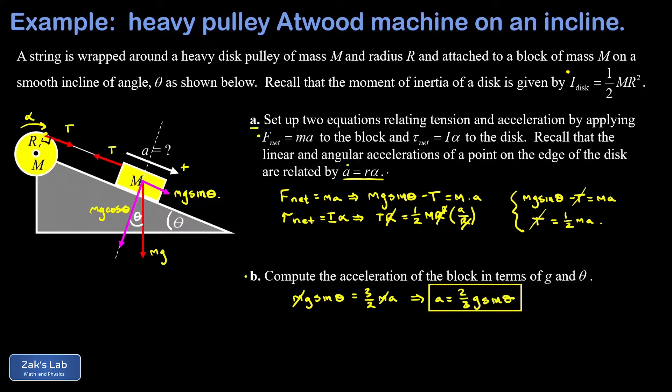When I gave this problem on an exam I needed a two-part question, so I didn't ask the obvious follow-up: what's the tension in the string? I want to show that real quick. All we have to do is plug in the a we just got into the second equation, and I get T equals one half ma. We've got the tension—T is one half ma, and I just figured out a is two-thirds g sine theta. The two's cancel, and I find a tension in the string of one-third mg sine theta.